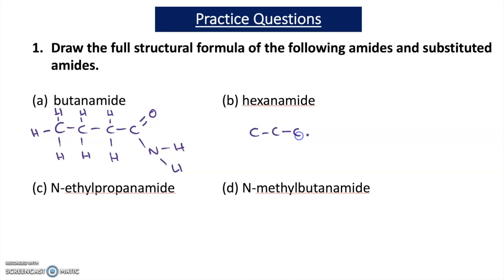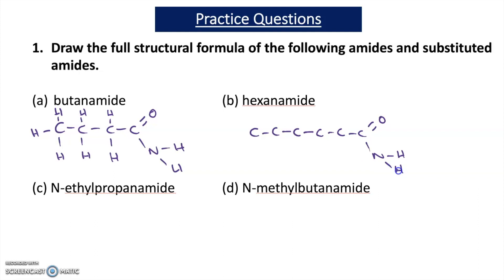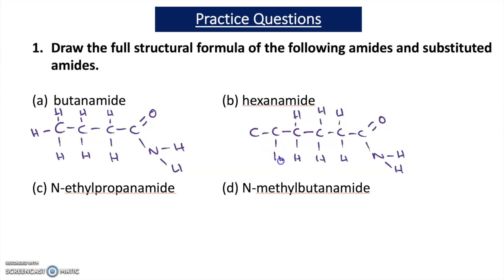Hexanamide would have six carbons in the chain, then a C=O NH2 functional group. Fitting the hydrogens around the molecule gives: CH3, CH2, CH2, CH2, CH2, CH2, C=O, NH2.